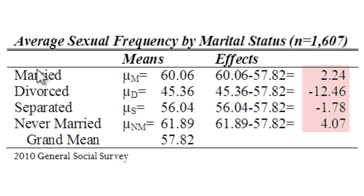For example, we know that any number that's positive here means that that group is above average with regard to sexual frequency. So the never married group on average has sex four times more frequently per year than the overall average. The married group has sex 2.24 times per year more than the average. On the other hand, the divorced and separated groups are below average, with the divorced groups being fairly far below average with a value of nearly 12.5 times per year less frequently than average.